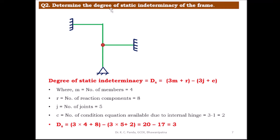Coming to the second example: determine the degree of static indeterminacy of the frame. This frame has one pin support with 2 reaction components, two fixed supports each with 3 reaction components, and one internal hinge. The number of members m = 4, the total reaction components r = 3 + 3 + 2 = 8, and the number of joints j = 5.